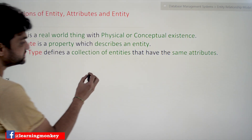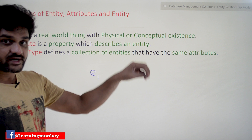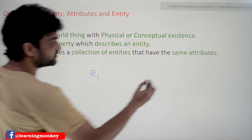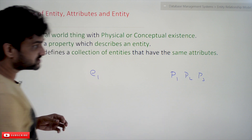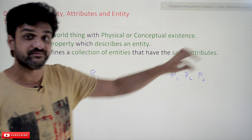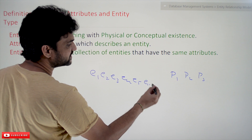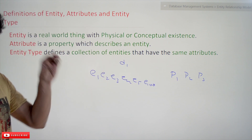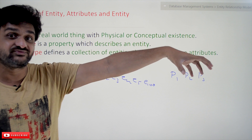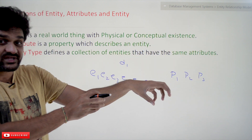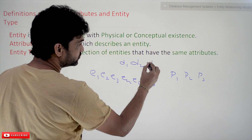The real world things in the company include employees. Each and every employee in the company is a real world thing with physical and conceptual existence. If you take projects — project one, project two, project three — these are real world things existing in the company conceptually. Similarly, department one, department two, department three — a department is a real world thing with physical existence. Any such thing physically or conceptually existing is what we call an entity.